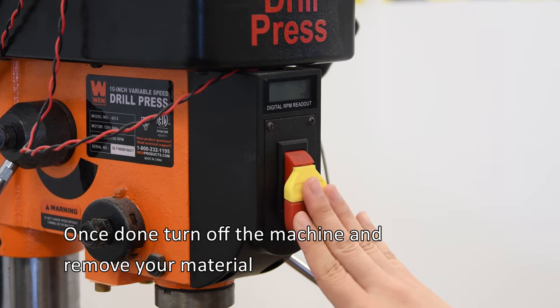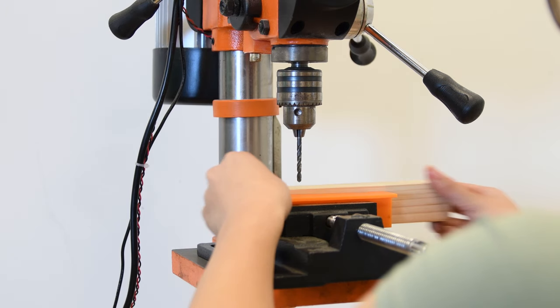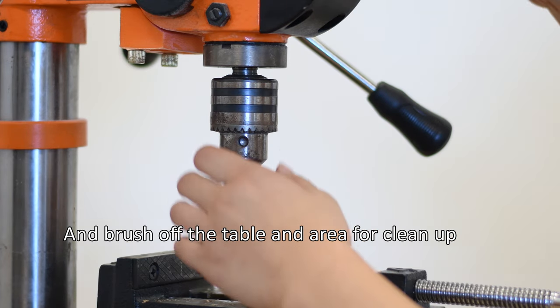Once done, turn off the machine and remove your material. Take out the bit and return it to where you found it and brush off the table for clean up.